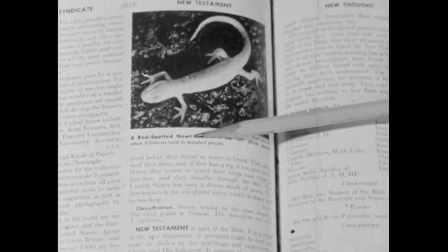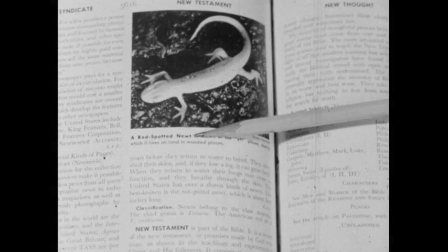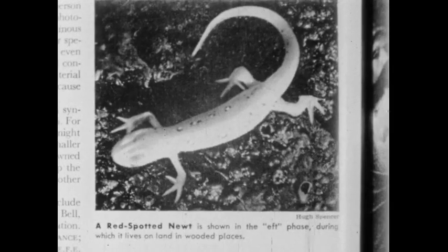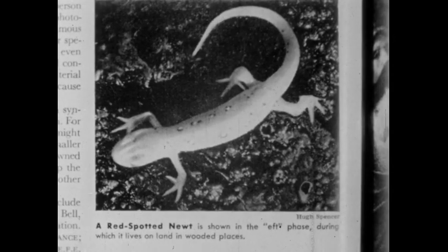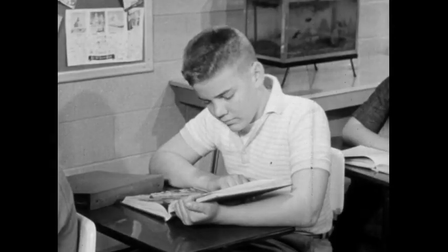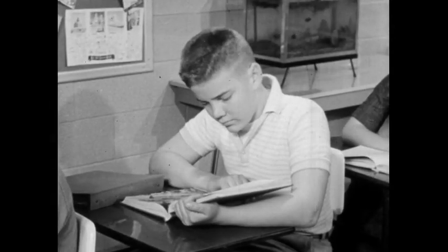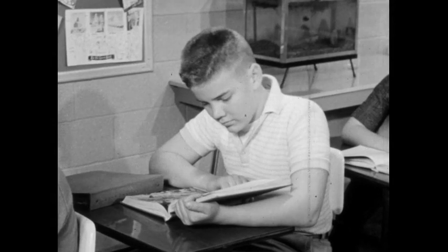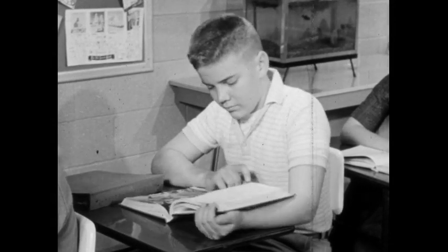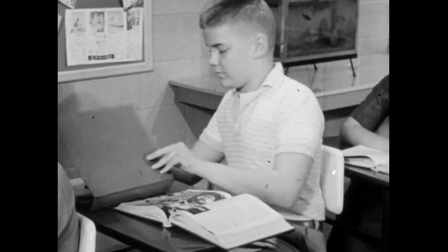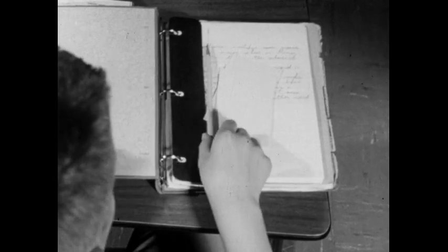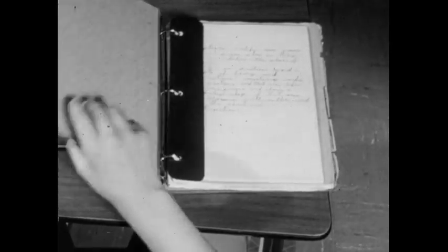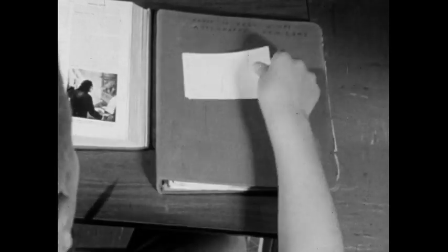From the picture, Ted learned that the newt he had caught was called a red-spotted newt. As Ted read the article, he knew that he wouldn't be able to remember all the facts he learned. He didn't want to copy all the information from the encyclopedia, so, as you've probably done, Ted took notes on what he read.